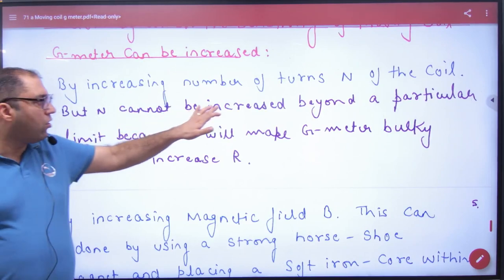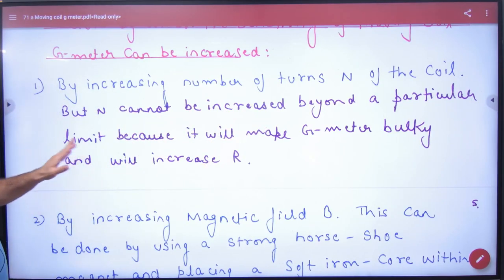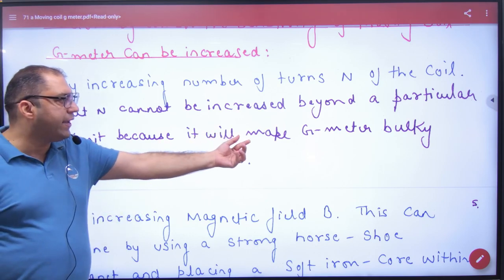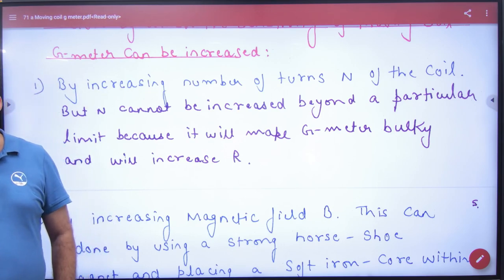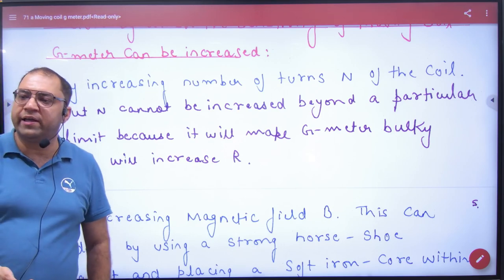There is no limit. There is a limit. Because it will make galvanometer bulky and will increase the value of R. So that's why, just to increase N is not a solution.